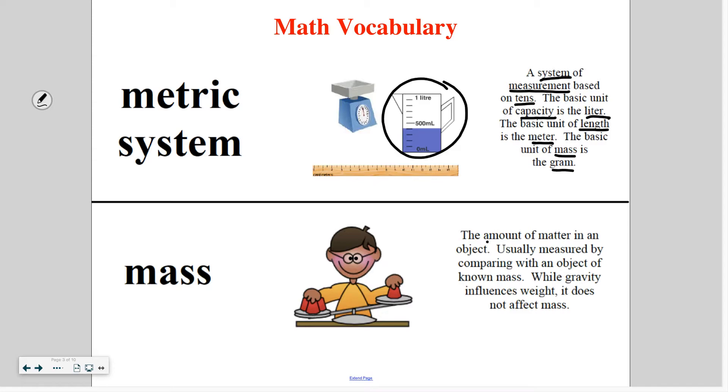Now mass is the amount of matter in an object. Thinking back to first and second grade where you learned about the three states of matter, mass is how that matter is measured up. It's usually measured by comparing with an object of known mass, which is basically a benchmark. While gravity influences weight,